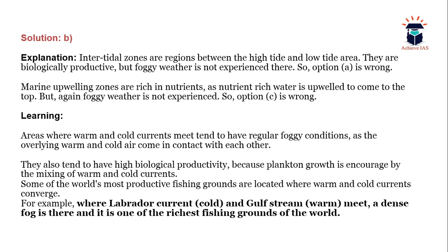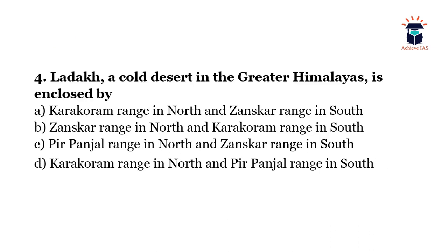Areas where warm and cold currents meet tend to have regular foggy conditions as the overlying warm and cold air come in contact with each other. They also have high biological productivity because plankton growth is encouraged by the mixing of warm and cold currents, creating a congenial environment. Some of the world's most productive fishing grounds are located where warm and cold currents converge — for example, where the Labrador Current and Gulf Stream meet, there is dense fog and it is one of the richest fishing grounds in the world.